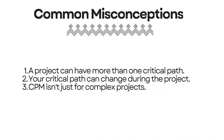Let's clear up some common misconceptions about the critical path method. Firstly, a project can have more than one critical path — if multiple paths through your project network have the same duration, they're all critical. Secondly, your critical path can change during the project, as activities finish early or late, what's critical can shift. Thirdly, CPM isn't just for complex projects — even simple projects can benefit from understanding which activities drive the schedule. And finally, Gantt charts and critical path networks are essentially two different ways to visualize the same information, and modern project management software can easily show both views based on the same underlying data.